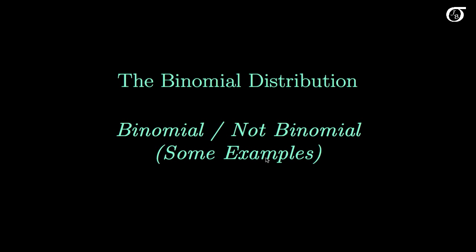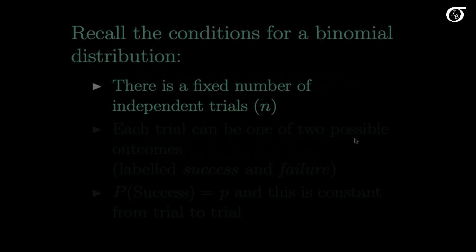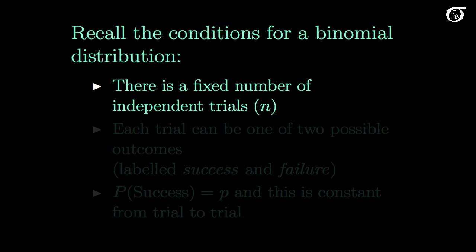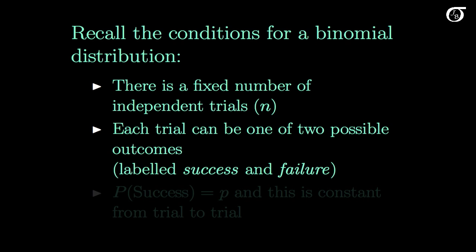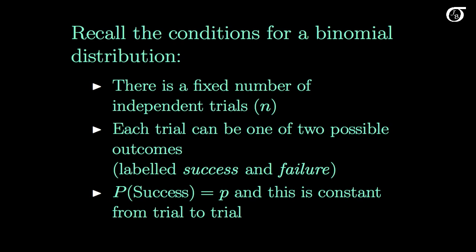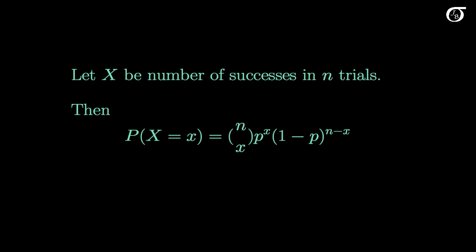Let's look a little more at the binomial distribution and work through a few examples. I'm going to assume you've already been introduced to the distribution. In this video we're going to look at some examples where the conditions for a binomial distribution are satisfied and some where they are not. Recall these conditions: we have a fixed number of independent trials N; each trial can be one of two possible outcomes — success or failure; the probability of success on any one trial is p, which is constant from trial to trial; the random variable x represents the number of successes in N trials, and its probability is given by the binomial formula.